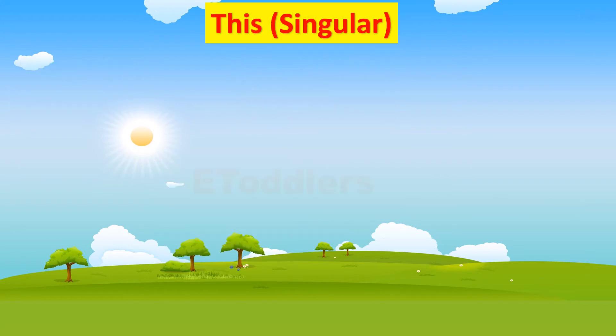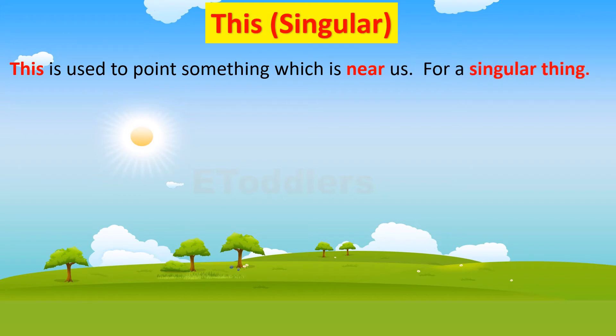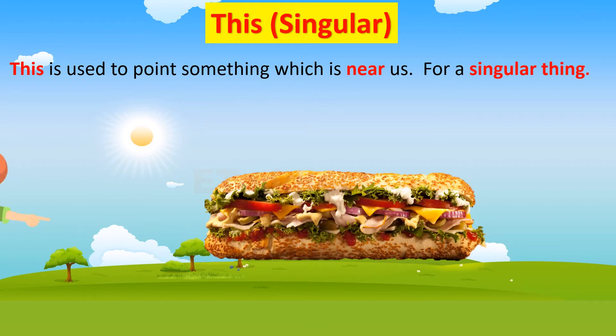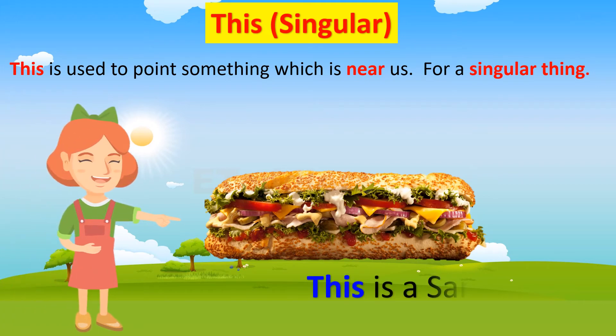Let's understand the concept. This is used to point something which is near us, for a singular thing. For example, this is a sandwich.